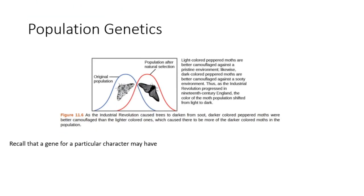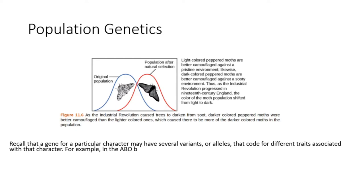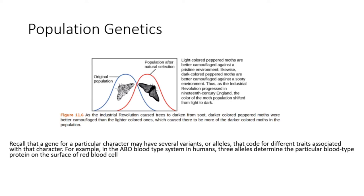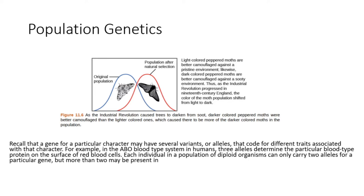Recall that a gene for a particular character may have several variants, or alleles, that code for different traits associated with that character. For example, in the ABO blood type system in humans, three alleles determine the particular blood type protein on the surface of red blood cells. Each individual in a population of diploid organisms can only carry two alleles for a particular gene, but more than two may be present across the population.